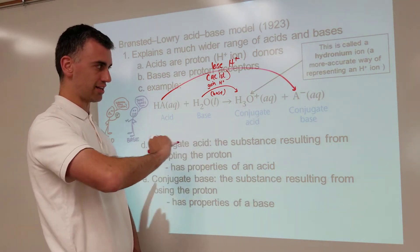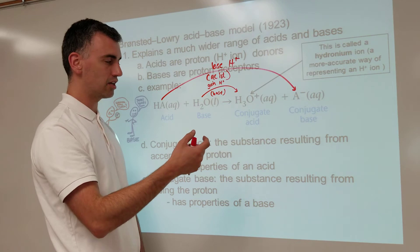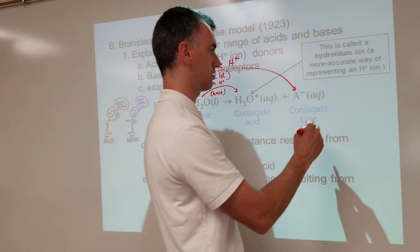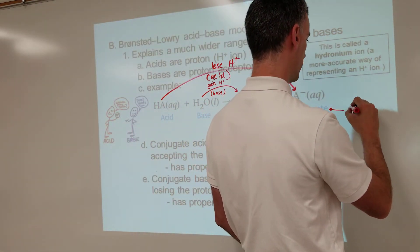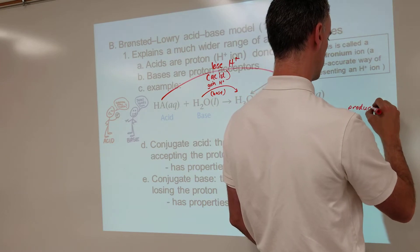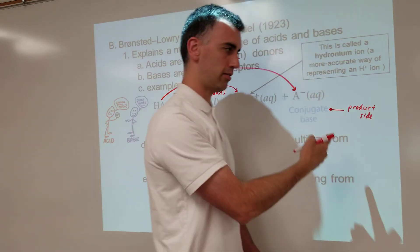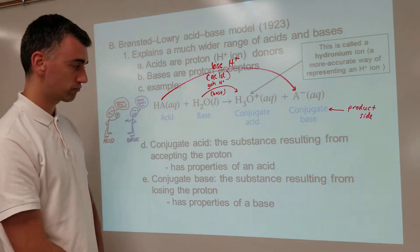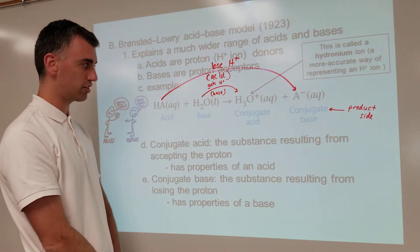So why are these called conjugate acid conjugate base? First of all, conjugate means it's the product of a reaction, so it exists on the product side. So if it exists on the product side, we call it conjugate.